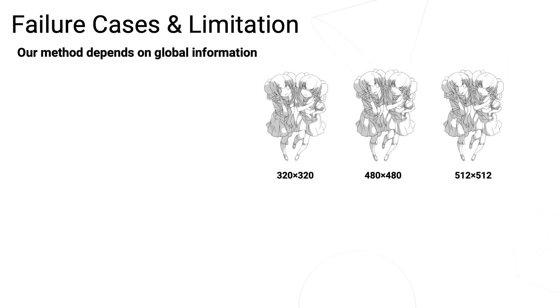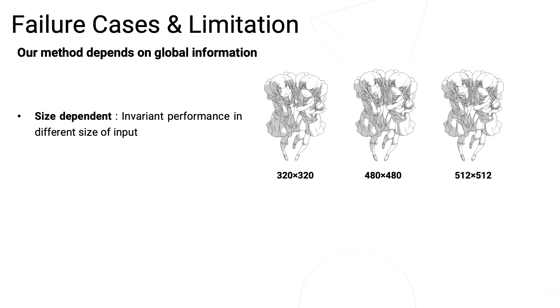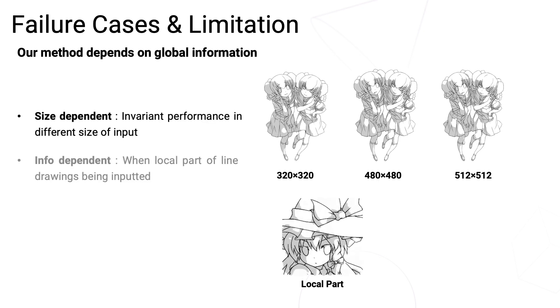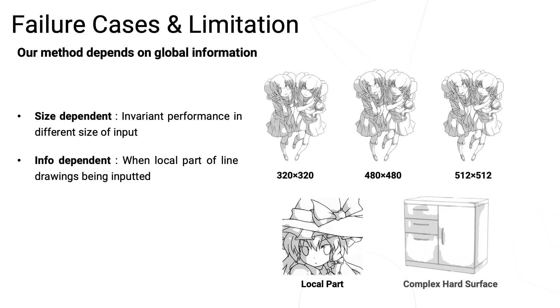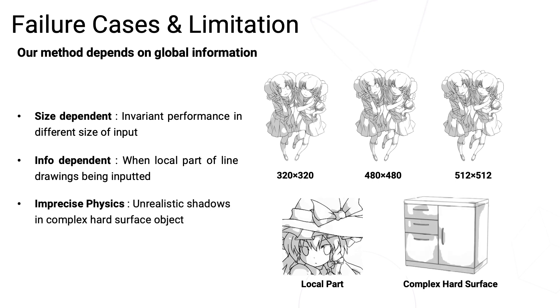These are the failure cases and limitations of our work. First, we have slightly different shadows for different sizes of input. Second, if inputting a local part of an integral line drawing, the network cannot reason the correct shadows. Third, our network suffers with hard surface objects.